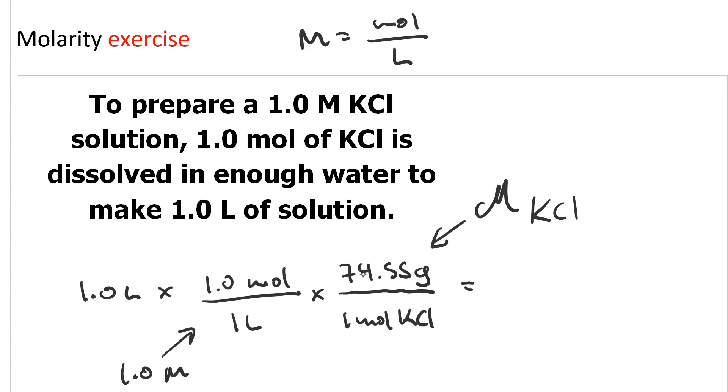So that means I need to weigh out 1 times 1 times 74.55 divided by 1 times 1. I can do this one without my calculator.